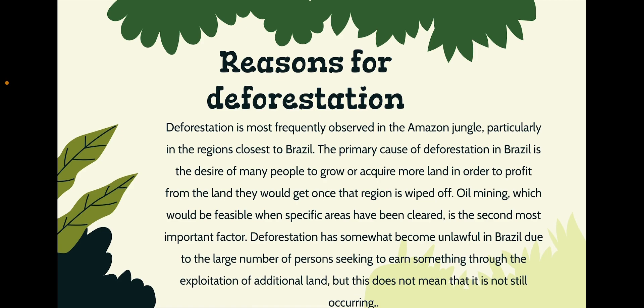Deforestation is more frequently observed in the Amazon jungle, particularly in the regions closest to Brazil. The primary cause of deforestation in Brazil is the desire of many people to grow or acquire more land in order to profit from that land once that region is cleared. Oil mining, which would be feasible when specific areas have been cleared, is the second most important factor contributing to deforestation. Deforestation has somewhat become unlawful in Brazil due to the large number of people seeking to earn something through the exploitation of additional land, but this does not mean that it is not still occurring.